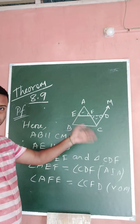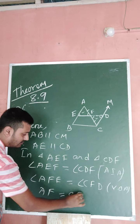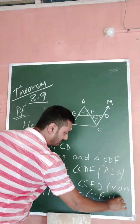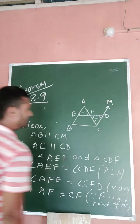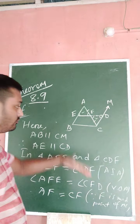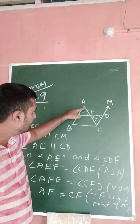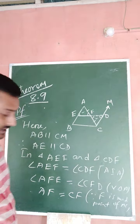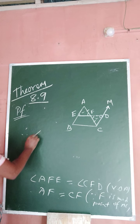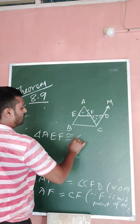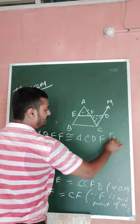It is given that F is the midpoint of AC, so AF is equal to CF. We now have: angle AEF = angle CDF (alternate interior angles), AF = CF (F is midpoint of AC), and angle AFE = angle CFD (vertically opposite). Therefore, triangle AEF is congruent to triangle CDF by AAS.